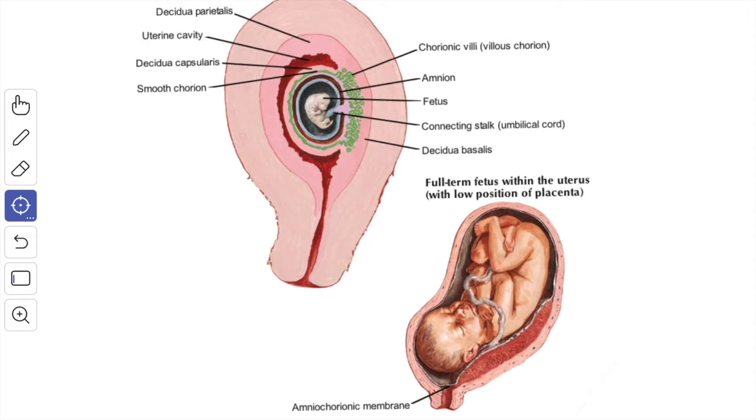In the second half of the pregnancy, it increases only in surface area and not in thickness. When you see the development, the placenta is developed from two sources.